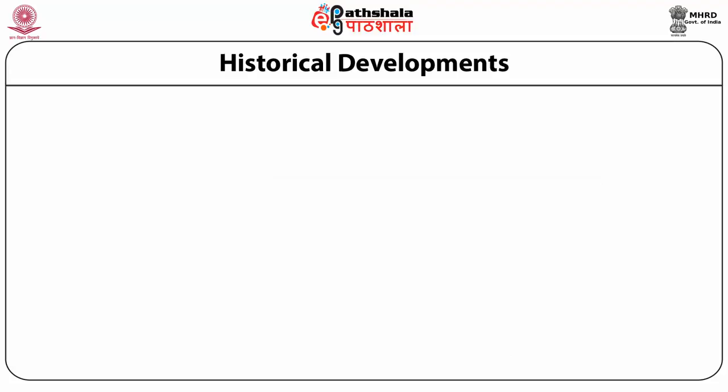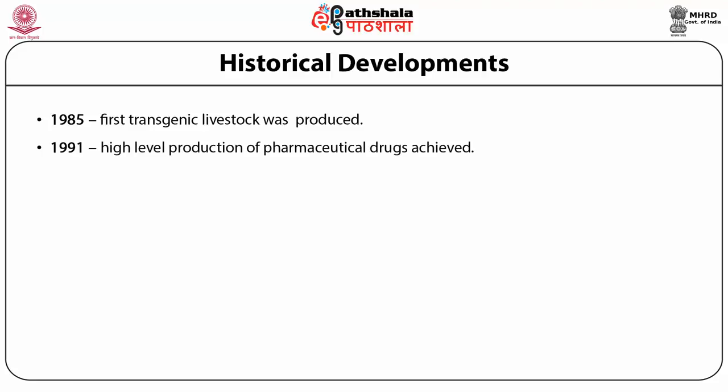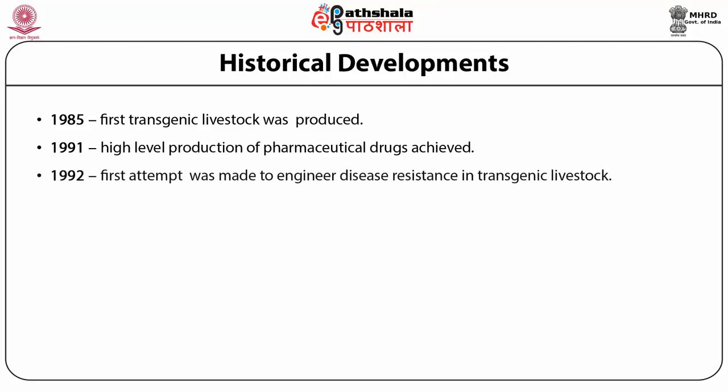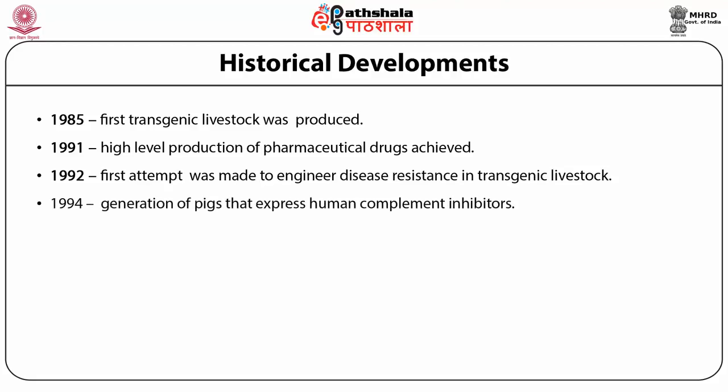What historical developments have taken place in transgenic animals? Starting from 1985, the first transgenic livestock was produced. In 1991, high-level production of pharmaceutical drugs was achieved. In 1992, the first attempt was made to engineer disease resistance in transgenic livestock.